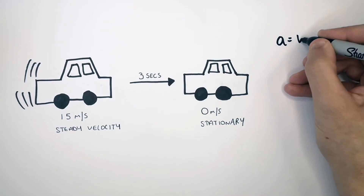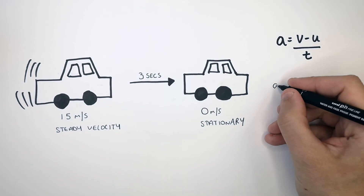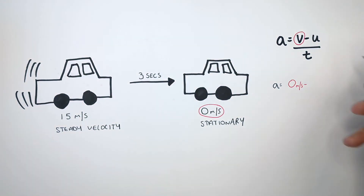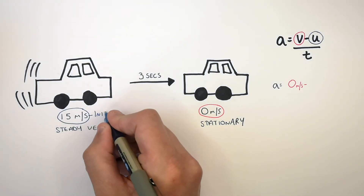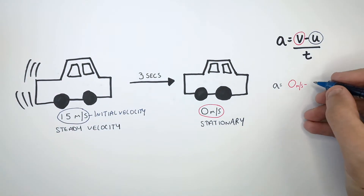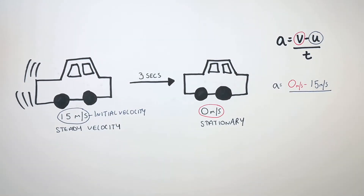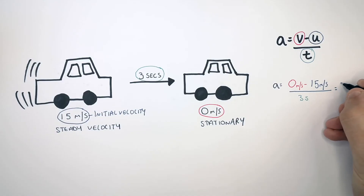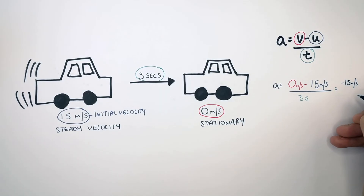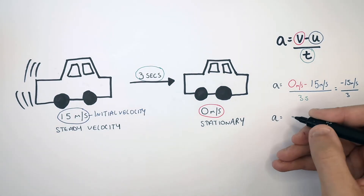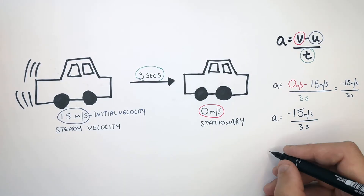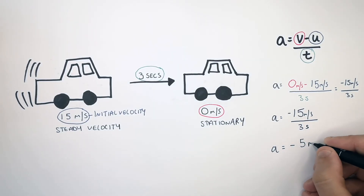Recall the equation a equals v minus u over t. We don't need to rearrange it because a is the subject. Identify v, the final velocity — that's 0 meters per second. Then we subtract the initial velocity, which is 15 meters per second. So you've got 0 minus 15 meters per second, and then you identify how long it took to decelerate, which is 3 seconds. The change in velocity is minus 15 meters per second, divided by 3 seconds. That gives you an acceleration of minus 5 meters per second squared.